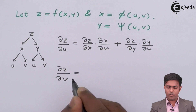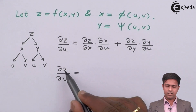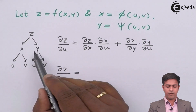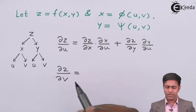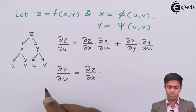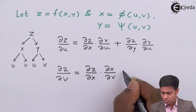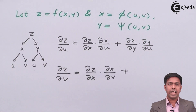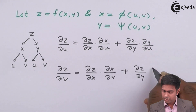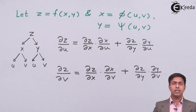Now for del Z/del V, the paths from Z to V are: Z→X→V and Z→Y→V. Applying the chain rule: del Z/del V = (del Z/del X)(del X/del V) + (del Z/del Y)(del Y/del V). This is the second formula for Case 2 of the composite function.